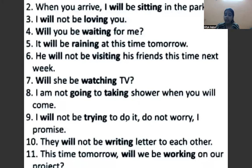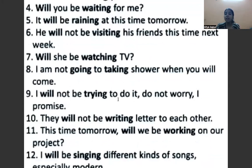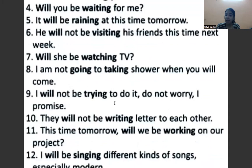I will not be trying to do it — मैं कोशिश भी नहीं करूँगा ये करने का. Here 'I' is the subject, 'will' is the helping verb. After the helping verb comes 'not', then 'be', and then 'try' with ing — trying.